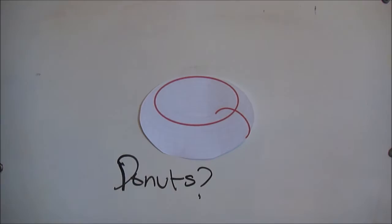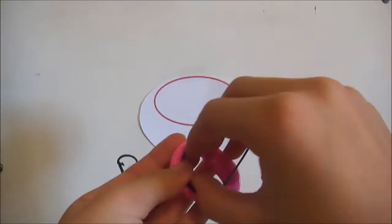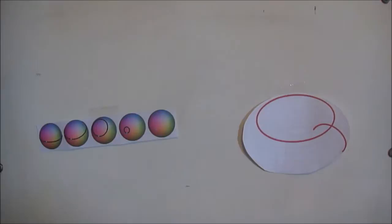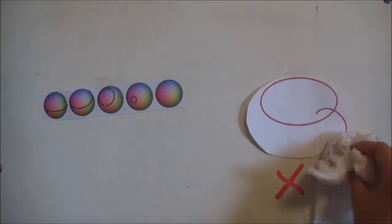But what about a donut? If you put a rubber band through the center, it cannot be shrunk to a single point without cutting through part of the donut or leaving the surface of the object. The same thing happens if you put it around the outer edge. Therefore, this makes the surface of the 2-sphere simply connected but the surface of the donut is not simply connected.